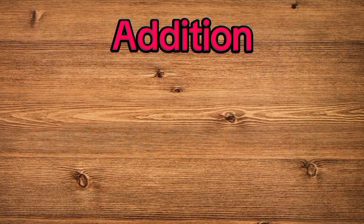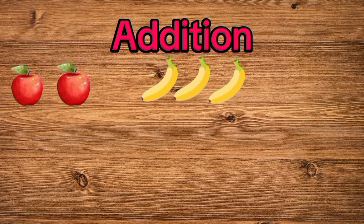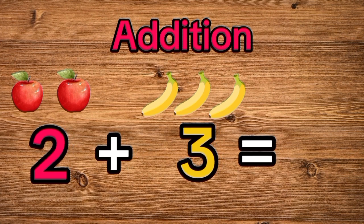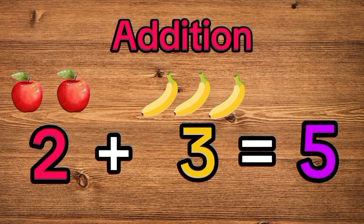First, we have addition. Addition is when we put things together. Imagine we have two apples and three bananas. That's two plus three. Let's count them: one, two, three, four, five. We have five pieces of fruit.